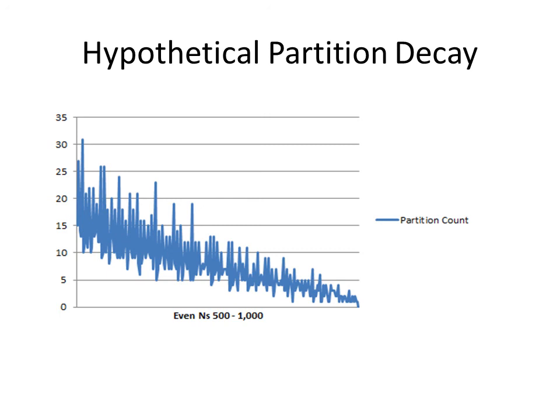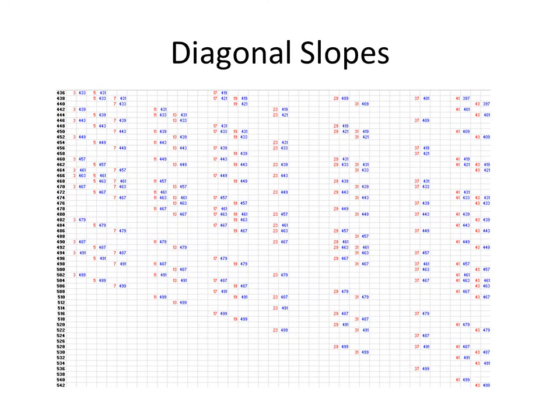Is it possible that Goldbach's conjecture was already found true in 1952?